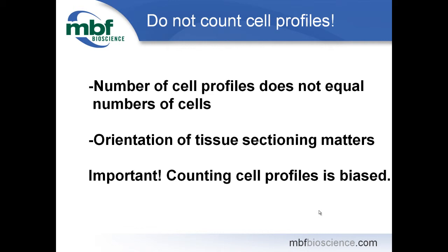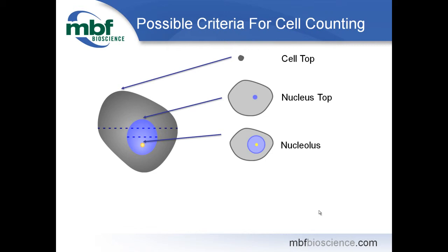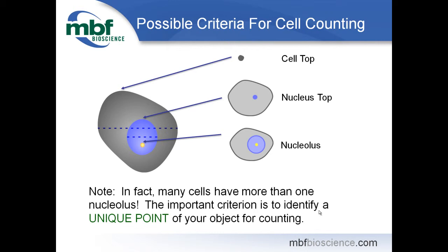With the optical fractionator probe, what you want to do is not count cell profiles but instead pick a unique point on the cell — a point that comes into focus in the Z axis and then goes out of focus. For example, if you were counting humans, you would pick their heads because every human has one head. So I would pick one uniquely identifiable part of the cell, whether it's the top of the cell, the top of the nucleus, or the maximum diameter of the nucleolus — but only if there is one and only one nucleolus. We want to have an unambiguous handle on the cell.